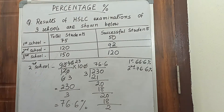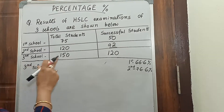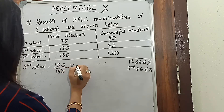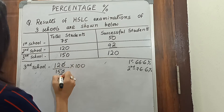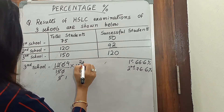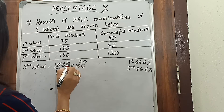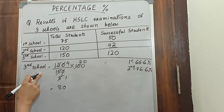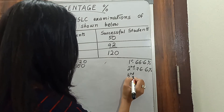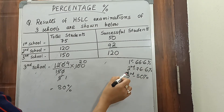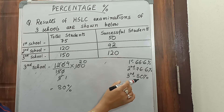Now let us find out for the third school in the same way. The third school had 120 out of 150, so 120 divided by 150 into 100. Simplifying gives 4 over 5, and 4 into 20 is 80. So the third school got 80 percent. To summarize: the first school got 66.6 percent, the second got 76.6 percent, and the third school got 80 percent.